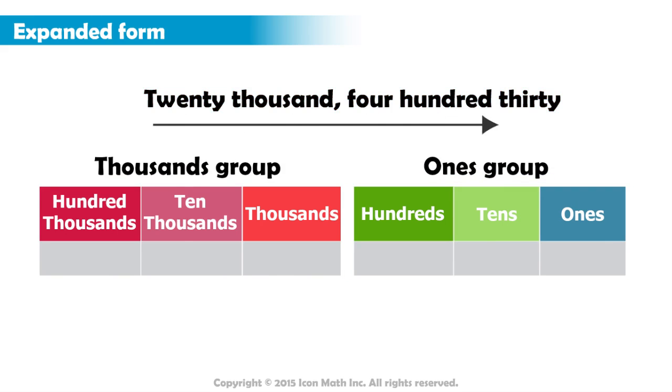From left to right, we start with the thousands group. We have 20,000.